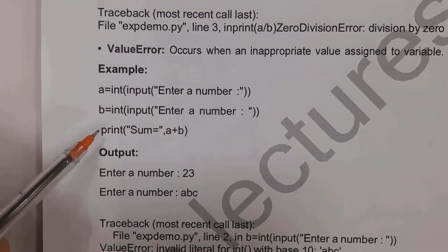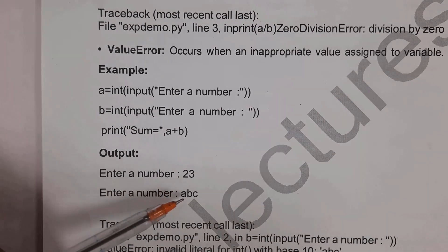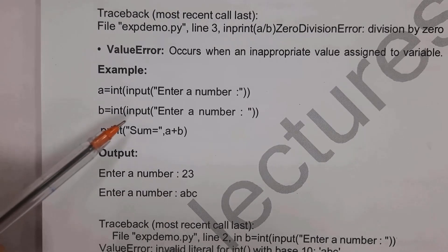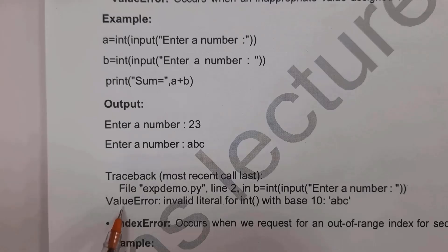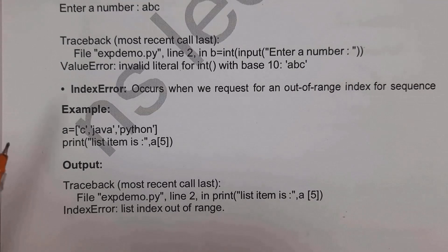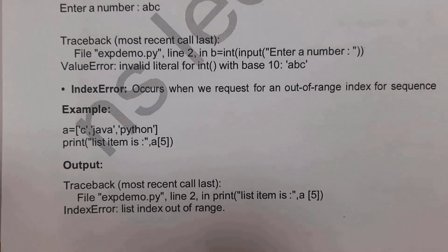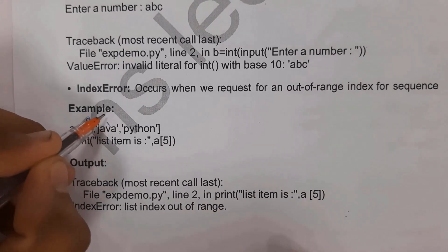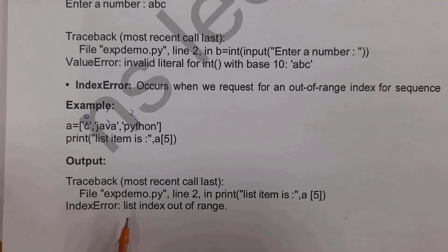IndexError: if a = ['C', 'Java', 'Python'] and you write print(a[5]), since index 5 doesn't exist — C is at index 0, Java at 1, Python at 2 — it will display 'IndexError: list index out of range'.